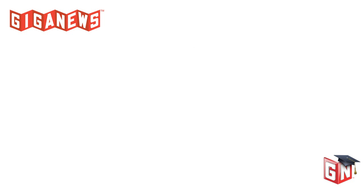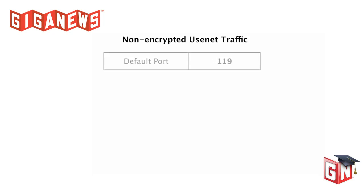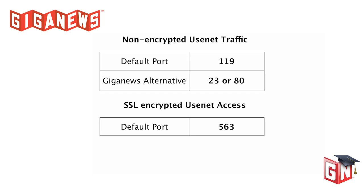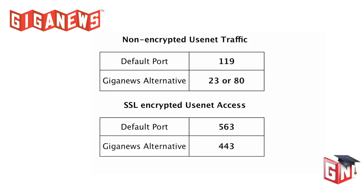The default port for non-encrypted Usenet traffic is 119. GigaNews also allows this traffic on ports 23 and 80. For SSL-encrypted Usenet access, traffic is carried by default over port 563. GigaNews also offers port 443 as an alternative for encrypted Usenet traffic.